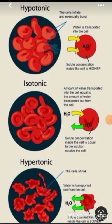In a hypotonic solution, the solute load inside the cell is higher compared to the surrounding, and water is lesser in quantity inside the cell compared to the surrounding. By the osmosis rule, the substance which is greater in quantity moves to the side where it is lower in quantity — this is the movement of molecules from higher concentration to lower concentration gradient. This is osmosis.